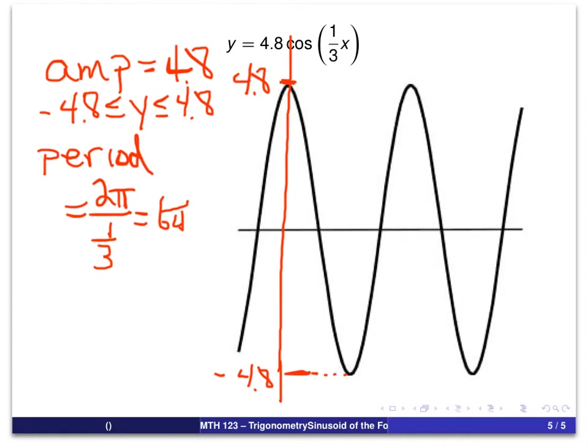So, what that tells me is if I do one complete period of the curve, we're going to be out to x equal to 6 pi. So, I can mark my x-axis here at 6 pi. About right there.